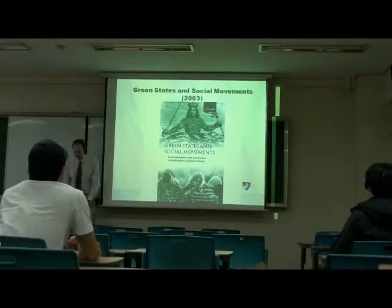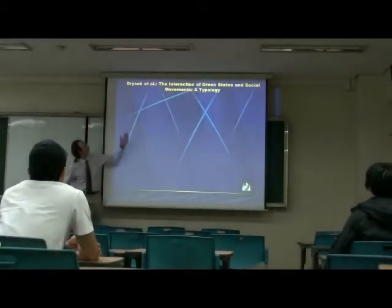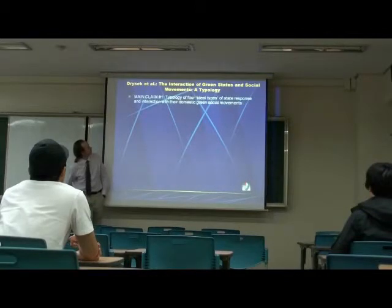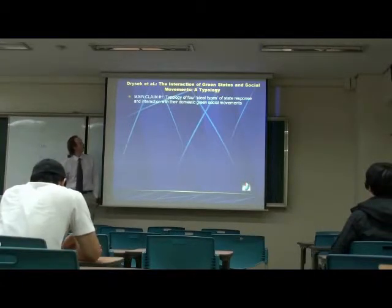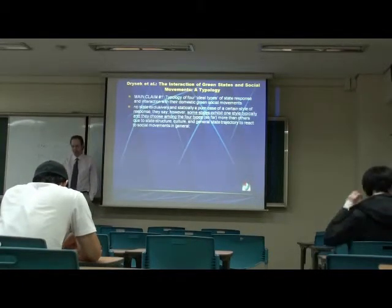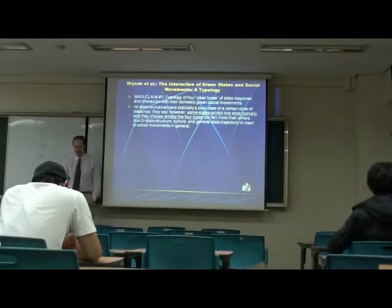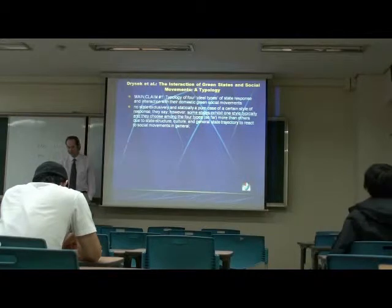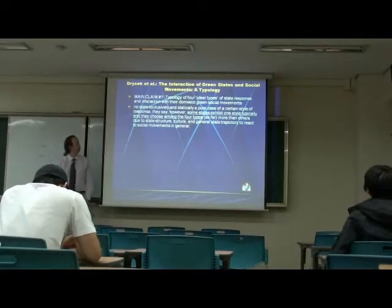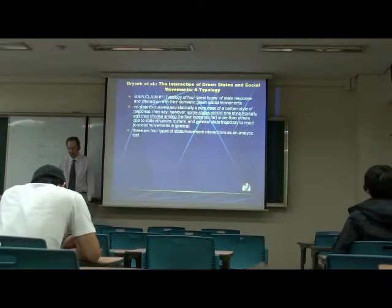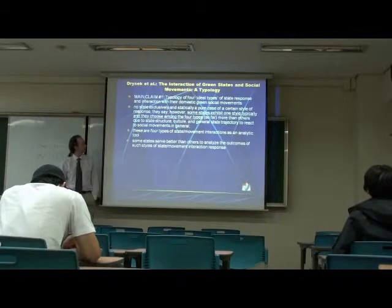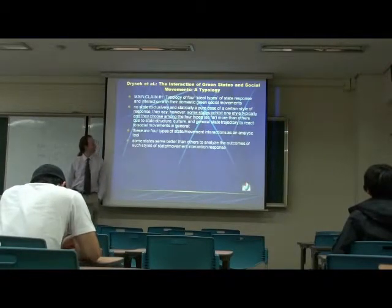Dreiser discusses the interaction of green states and social movements, claiming there are four ideal types of state response and interaction with their domestic green social movements — that no state exclusively and statically is a pure case of a certain style of response. However, some states exhibit one style typically. These four types of state-movement interactions are an analytic tool, and some states serve better than others to analyze the outcomes of such styles. That's why they chose those four states.